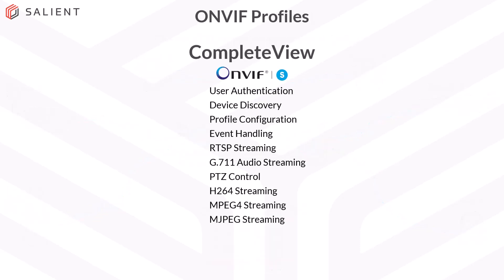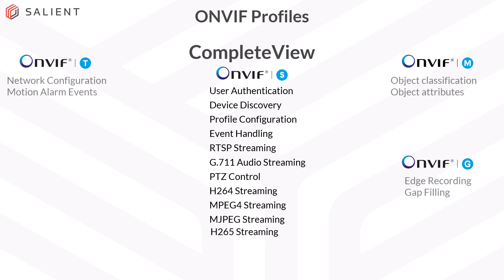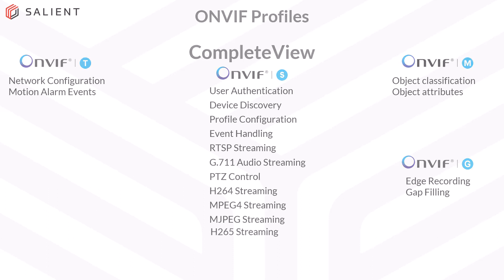CompleteView is currently conformant with ONVIF Profile S, but ONVIF's structure allows flexibility for members to add specific features from other profiles. We've already added the capability of H.265 streaming from Profile T, and we're working on adding other Profile T features along with features from Profile M and G to enhance CompleteView's capabilities and allow you to utilize the camera technology features you invested in.